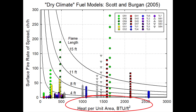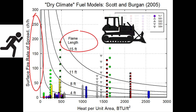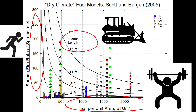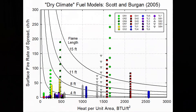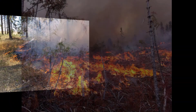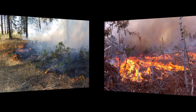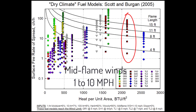Notice the x-axis is heat per unit area. If rate of spread is how fast you'll need to move to catch a fire, and flame length is what type of resources you'll need to use to fight the fire, then heat per unit area is the amount of effort that's needed to put it out. Additionally, heat per unit area is directly related to the fire severity on a site.